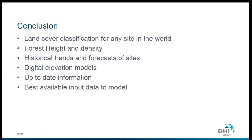My conclusions are quite simple. We now have a range of input data on land cover, forest height and density. We can look at historical trends and forecast sites, and we can provide digital elevation models. The main point is that this is timely information — it's up to date, but we can also assess historical changes going back in time. We are interested to learn how this can improve the wind resource model, and that is why we engaged in this project.